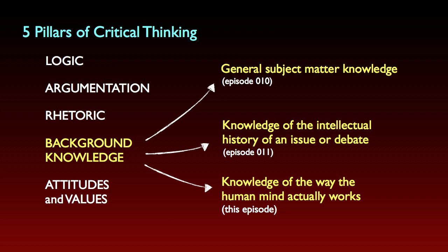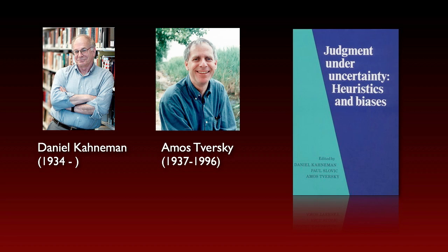There are a lot of different scientific fields that study how our minds actually work: behavioral psychology, social psychology, cognitive psychology, cognitive neuroscience — a bunch of fields. Over the past 30 years, we've learned an awful lot about human reasoning and decision-making. A lot of this research was stimulated by the work of two important researchers, Daniel Kahneman and Amos Tversky, going back to the early 1970s.